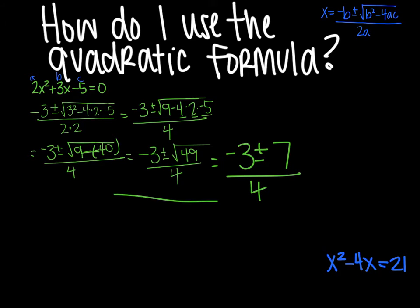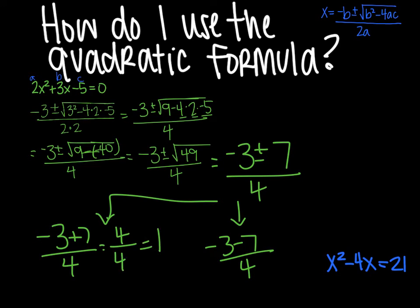Now we can break it into two pieces. So negative 3 plus 7 all divided by 4, and negative 3 minus 7 all divided by 4. Negative 3 plus 7 is positive 4. So 4 over 4 gives me 1.